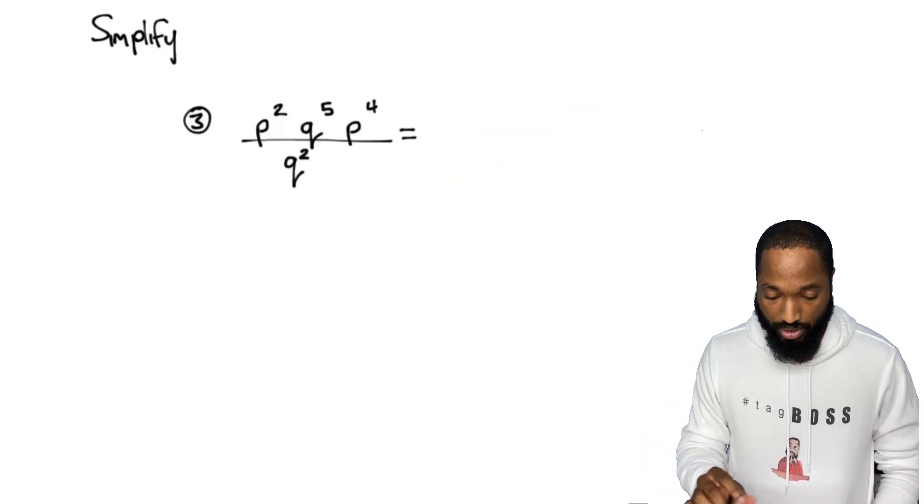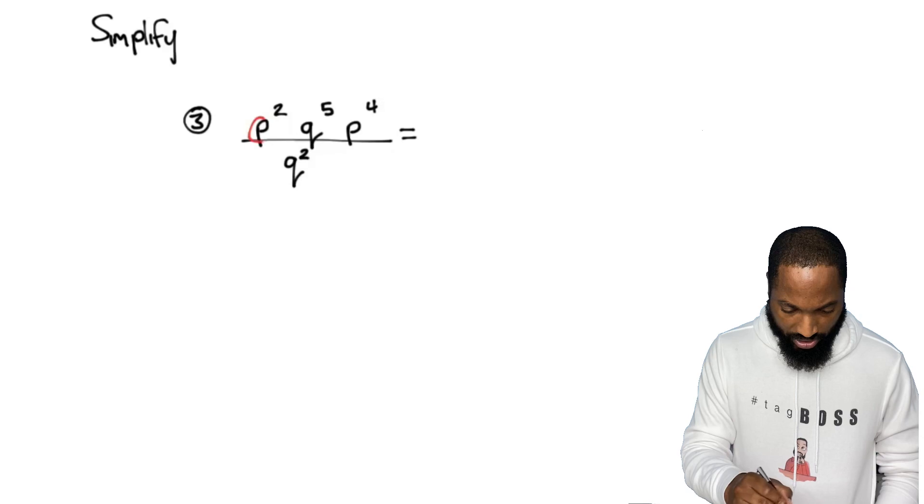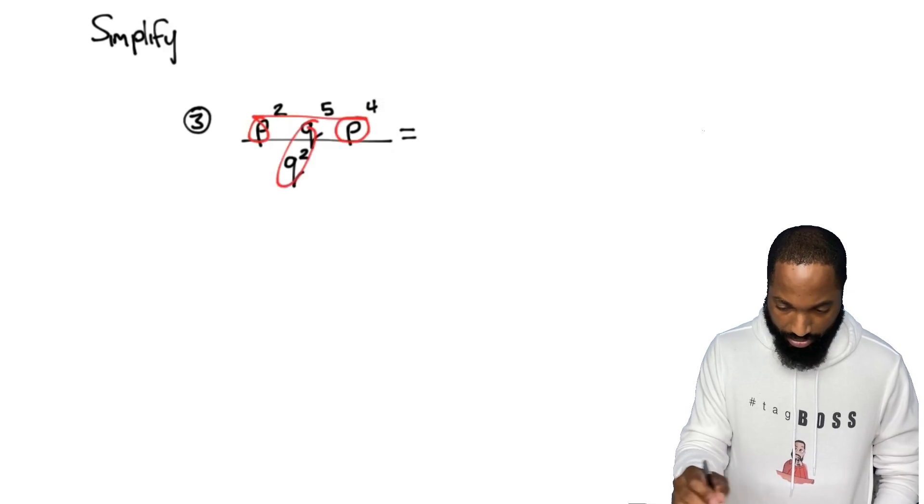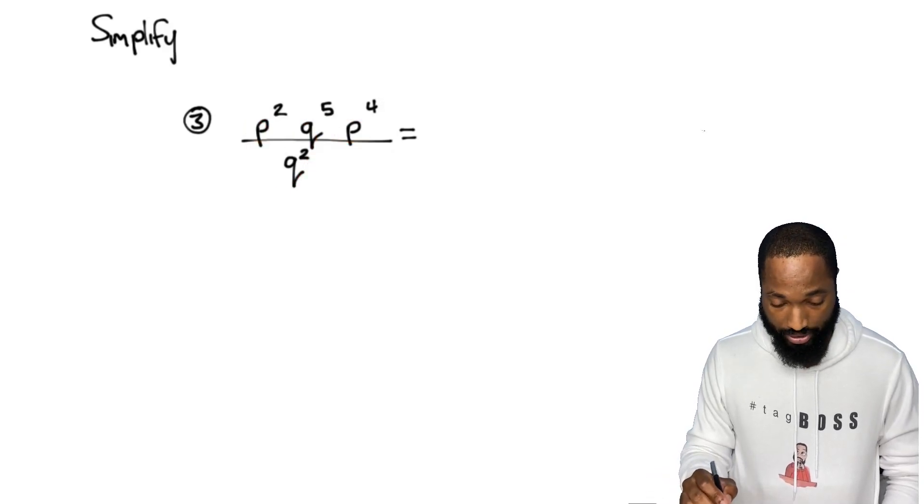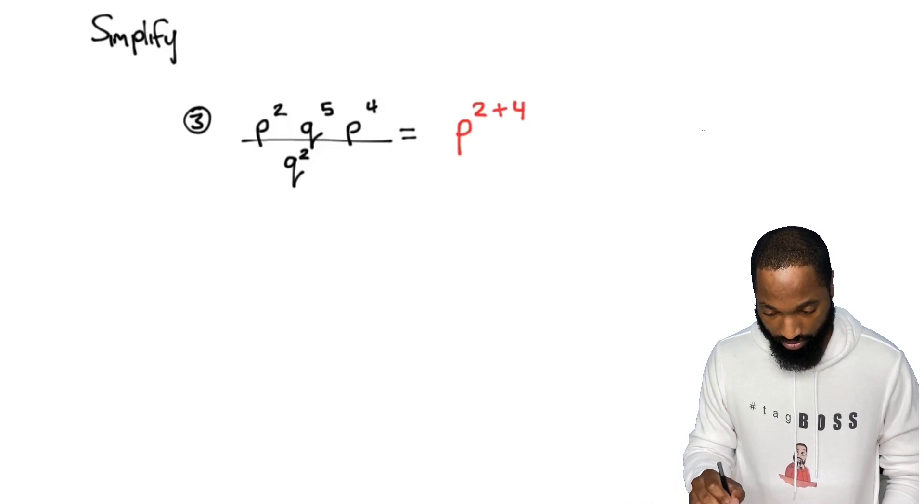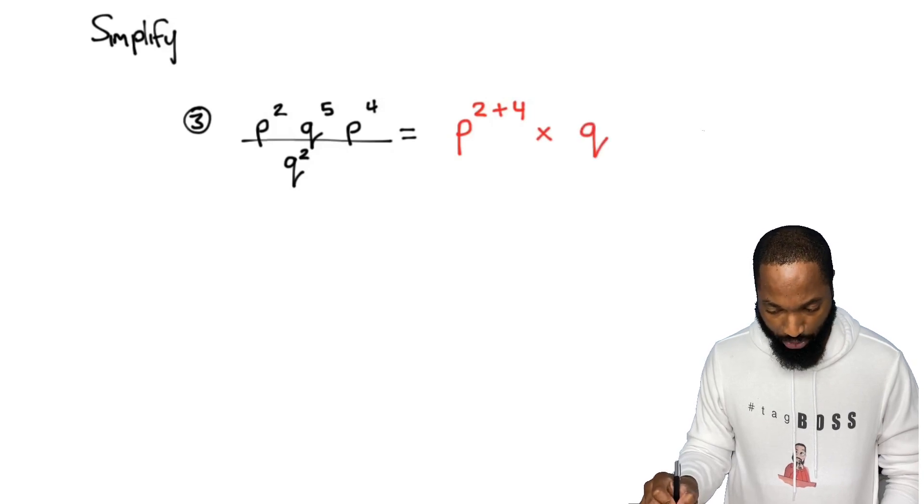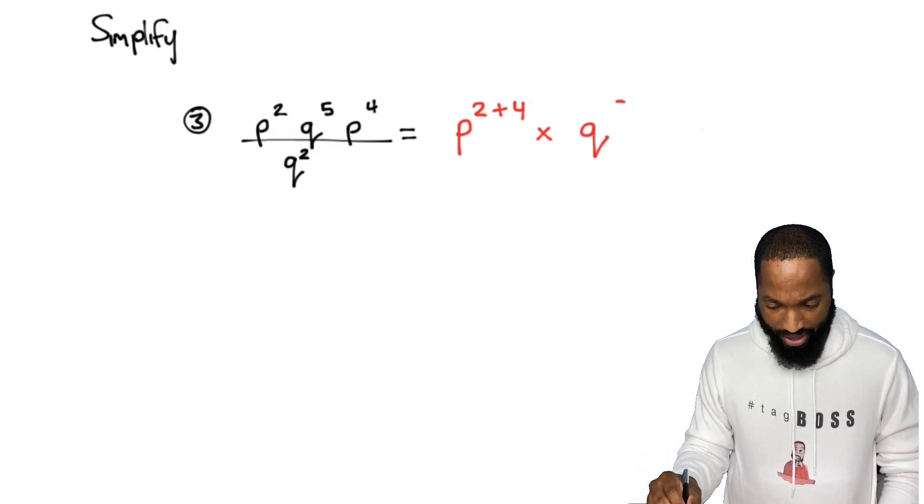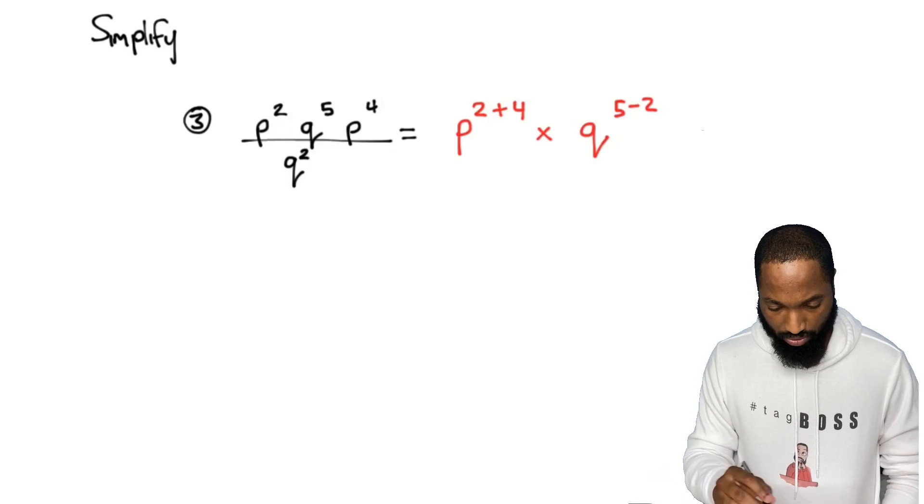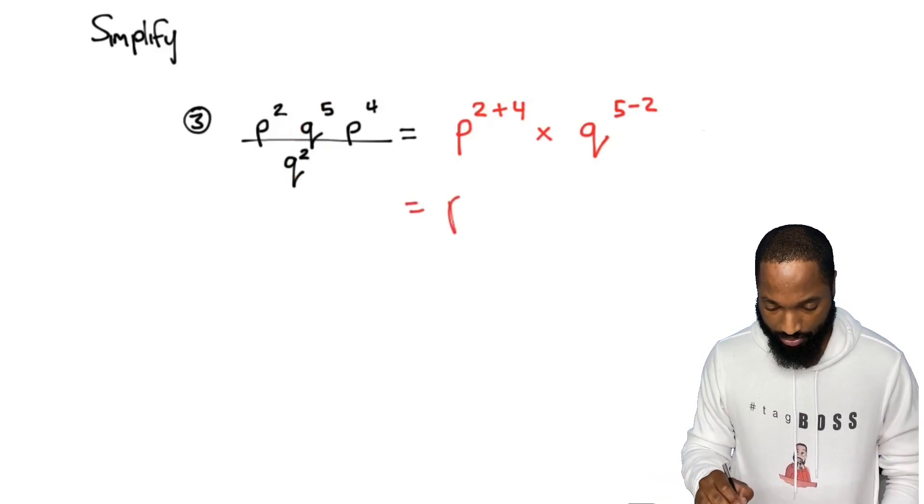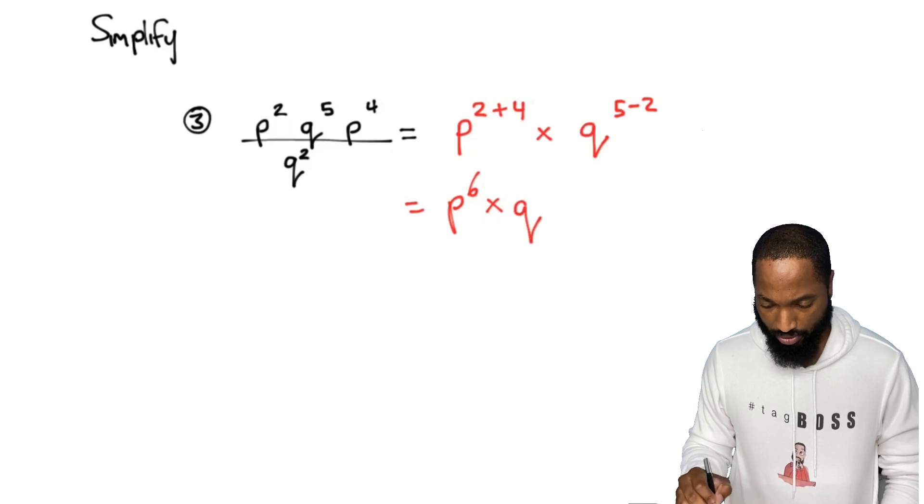Different same bases here, same bases there, a lot of stuff going on. So this is really p two plus four, multiply, I'm just putting multiply to get a little separation, five take away two because these were dividing.